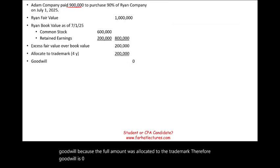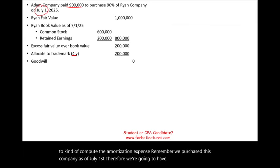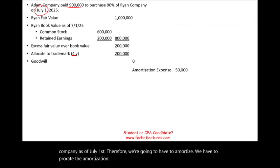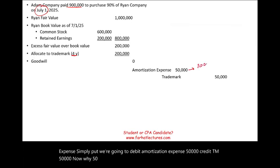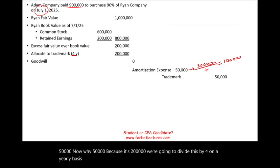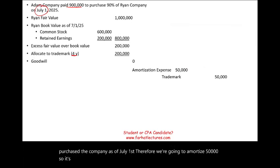Since we're going to be amortizing this trademark over four years, we have to compute and prorate the amortization expense. We purchased this company as of July 1st, so we have to prorate the amortization expense. We debit amortization expense $50,000 and credit trademark $50,000. Why $50,000? Because $200,000 divided by four gives $100,000 per year on an annual basis, times one-half because this covers only a half year. We purchased the company as of July 1st, so we amortize $50,000. It's very important to understand this amortization process.